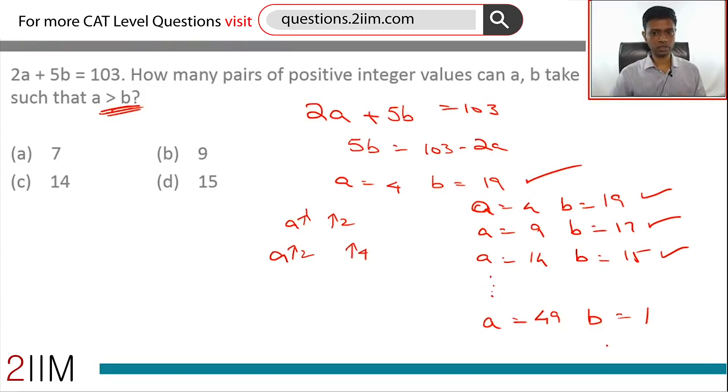All of these are possible. Totally, think about b. b can take values 1, 3, 5, 7, 9, all the way till 19. There are 10 different values. Now let's come to this constraint a greater than b. 4, 19 doesn't work. 9, 17 doesn't work. 14, 15 doesn't work. If you take a to 19, b goes to 13. This works, and from here on everything will work. a is increasing, b is reducing.